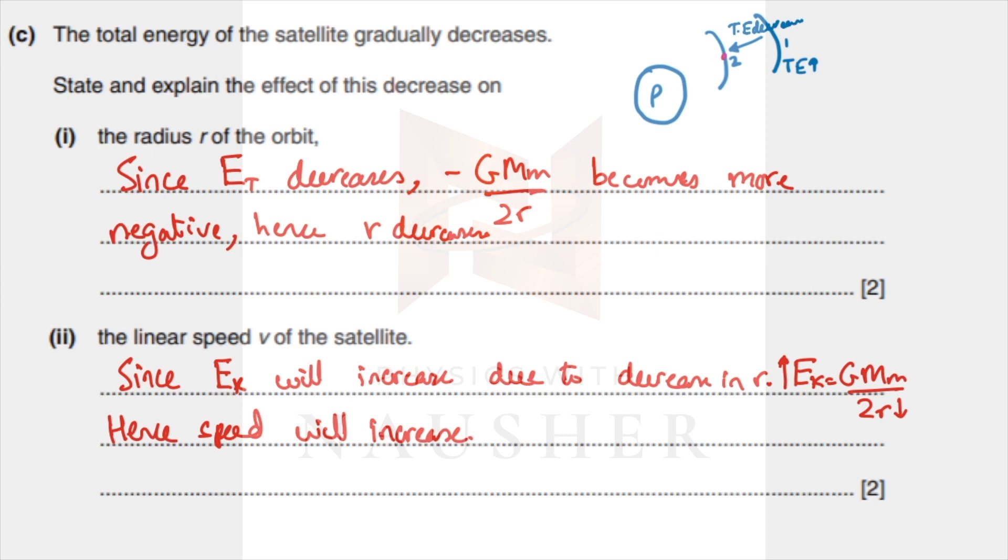When you switch off your engines and lose energy, you fall back inwards. So with your total energy decreasing, the radius of the orbit was first r1, now it's r2, so the radius of the orbit decreases.